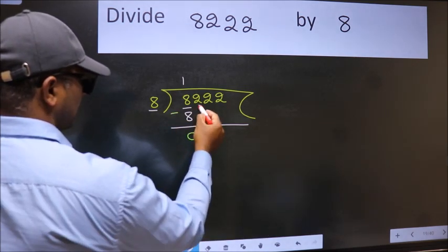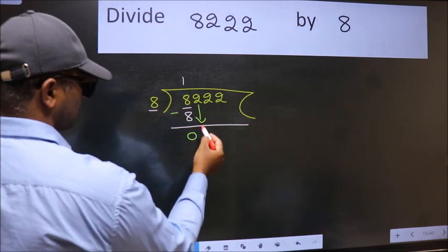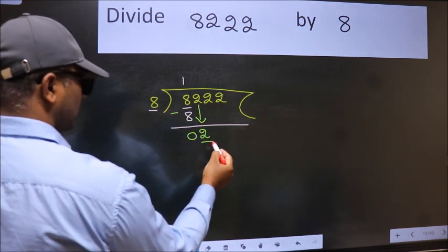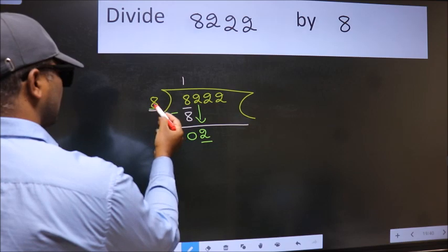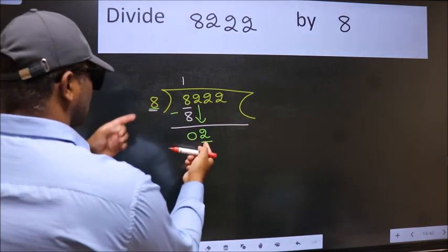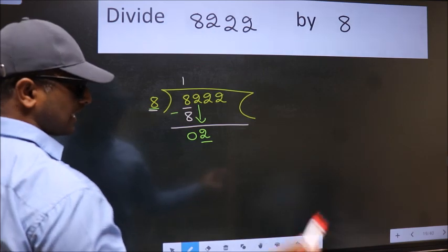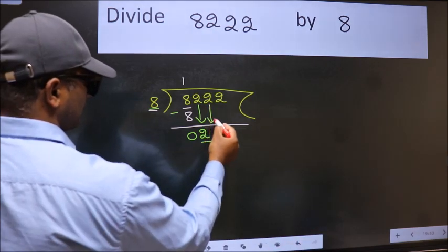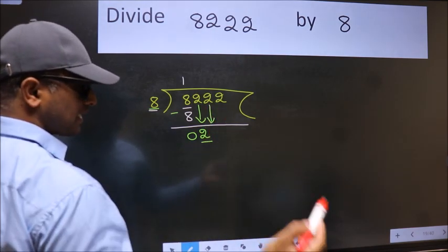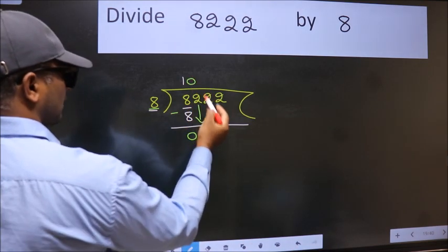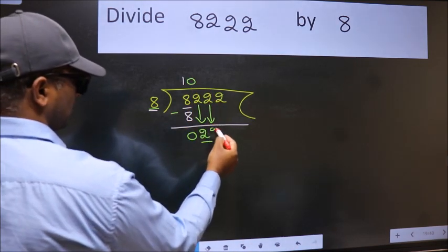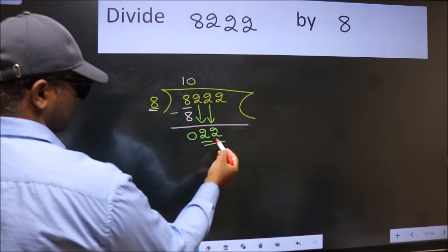After this, bring down the next number: 2. Now we have 2 and 8. Since 2 is smaller than 8, we should bring down the second number. The rule is to put 0 here first, then we can bring this number down. So we have 22.